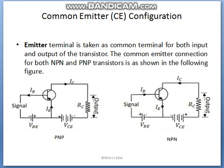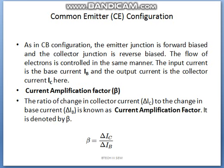In common emitter configuration, the emitter terminal is taken as the common terminal for both input and output of the transistor. The common emitter connection for both NPN and PNP transistors is shown in the figure. As in common base configuration, the emitter junction is forward biased and the collector junction is reverse biased. The flow of electrons is controlled in the same manner. The input current is the base current and the output current is the collector current in common emitter configuration.